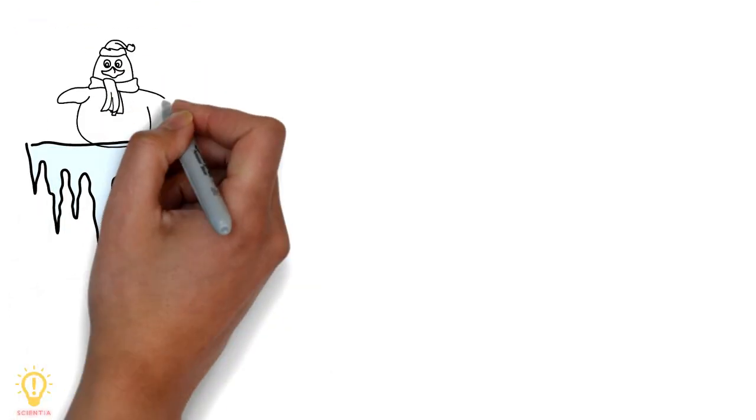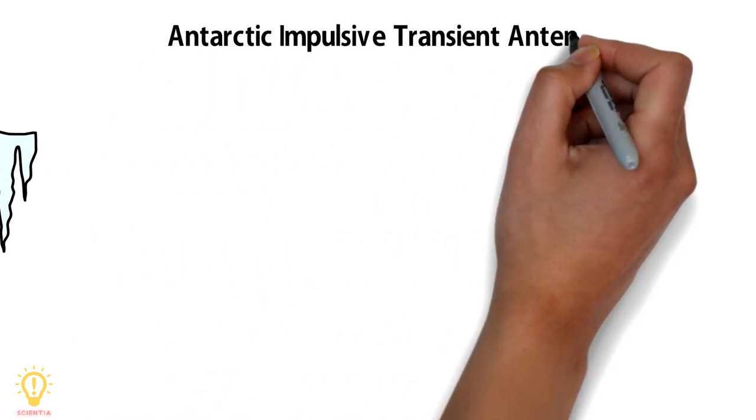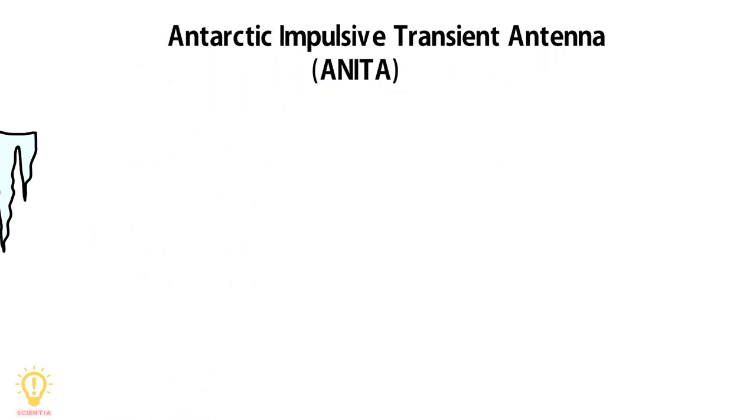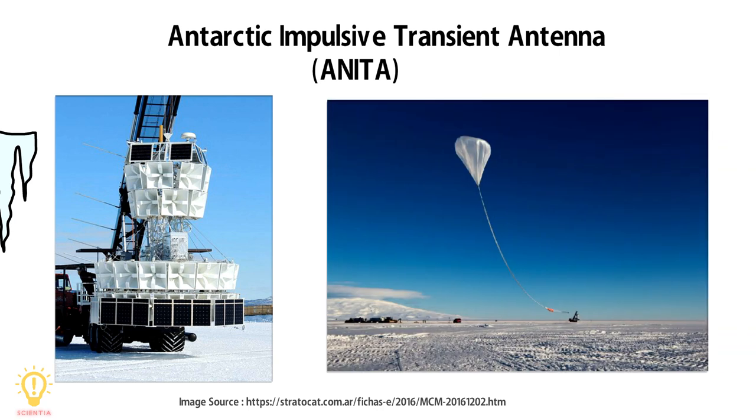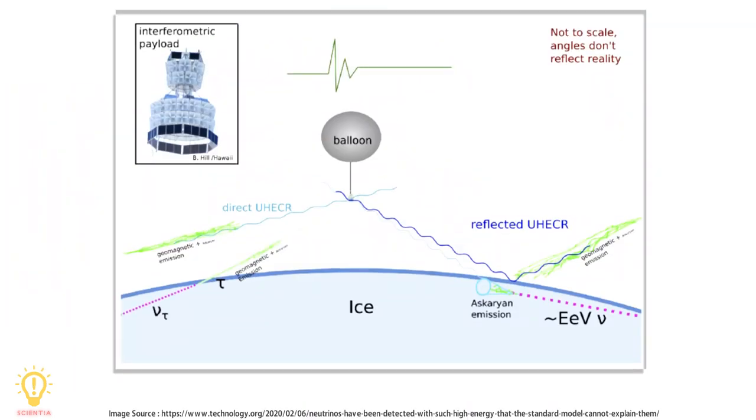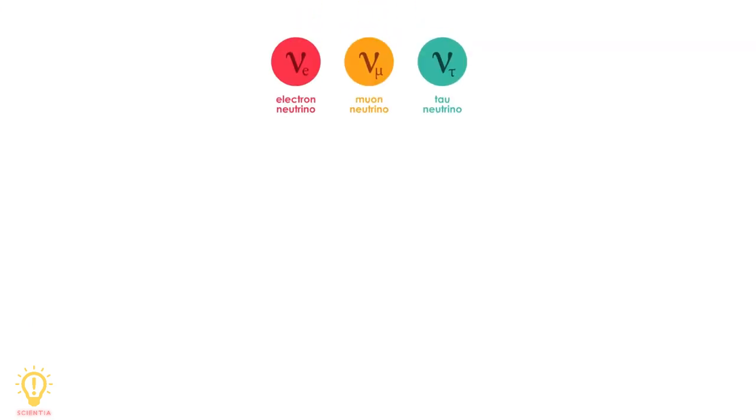So, what happened at Antarctica? Antarctic Impulsive Transient Antenna, also known as ANITA, is a telescope that comprises radio antennas attached to a giant balloon that hovered over Antarctica to detect matter like the high-energy particles called neutrinos from space.